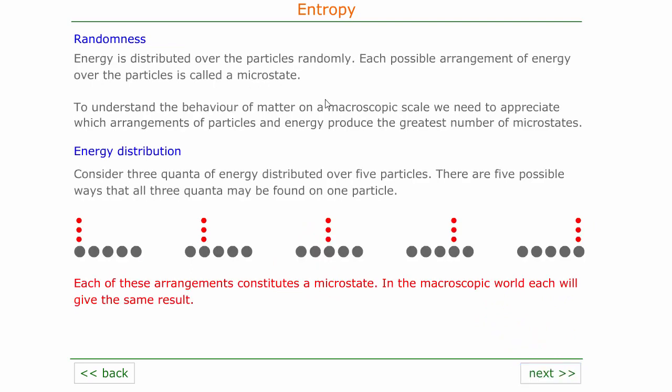Now energy is distributed over the particles randomly — it's like throwing a bucket of sand into some water; it just goes all over the place, and all possibilities are likely. What happens is when the energy is randomly distributed over all of the particles, it produces a particular state called a microstate. This is a specific arrangement of energy on the particles, and it's obviously very, very complicated when we have a huge number of particles and a huge amount of quanta.